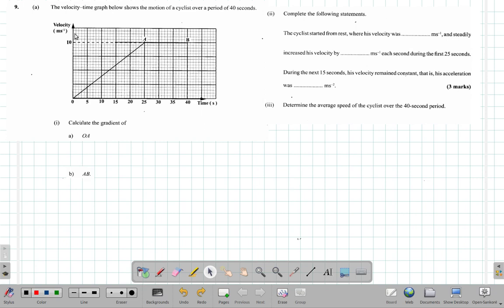We have question 9 from the May 2017 CSEC Maths paper. The velocity-time graph below shows the motion of a cyclist over a period of 40 seconds.